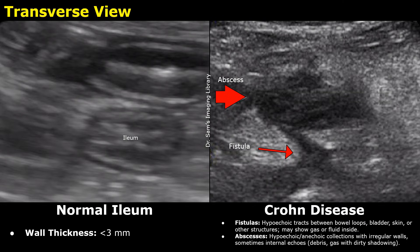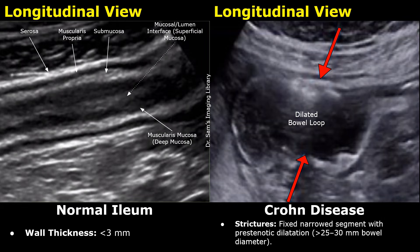In chronic and severe cases of Crohn's disease, fistulas can form. On ultrasound, they may appear as hypoechoic tracts between the bowel loops, bladder, skin, or other structures, though their visualization can be difficult. Abscesses may also occur, typically appearing as hypoechoic or anechoic collections with irregular walls and heterogeneous areas. A stricture may also occur, referring to a dilated bowel segment just before the segment affected by Crohn's disease. The dilated bowel may have a diameter greater than 3 cm, and this is often called prestenotic dilatation.